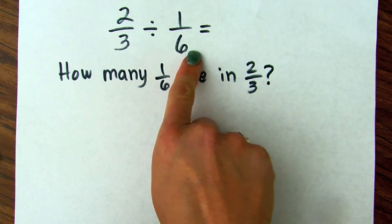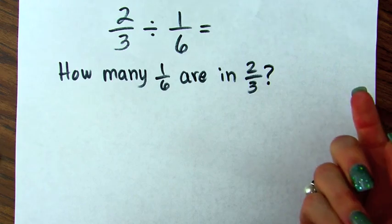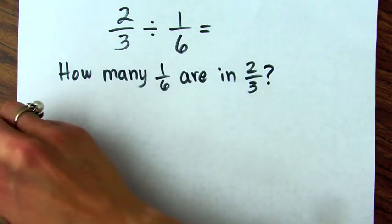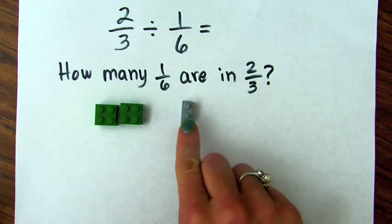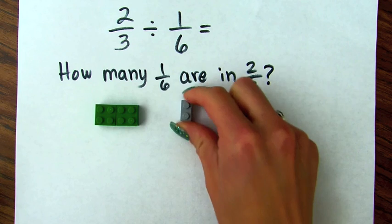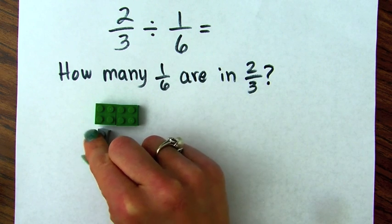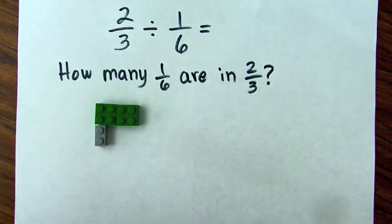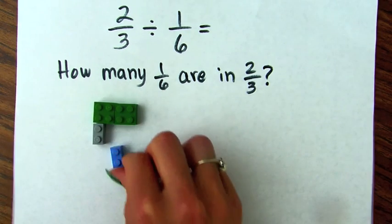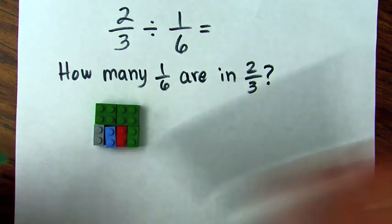Now we're going to do the same thing: two-thirds divided by one-sixth. Remember, it's important to word it as how many one-sixths are in two-thirds. So I need to start with my two-thirds — which were these — and my one-sixth was the little ones. We want to know how many one-sixths are in two-thirds. How many of these does it take to match that? You can set them underneath side by side or build on top. One, two, three, four. So the answer would be four.